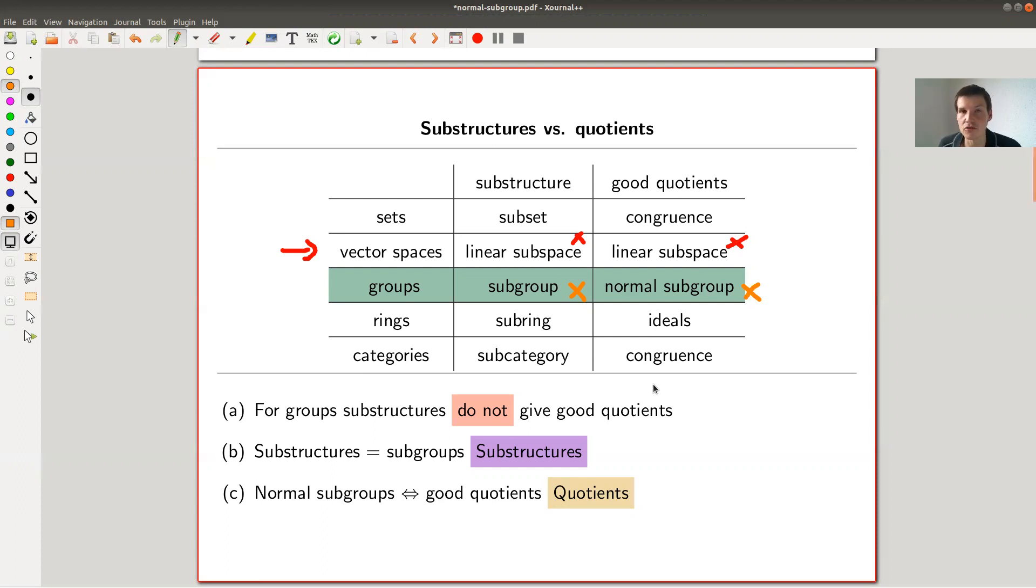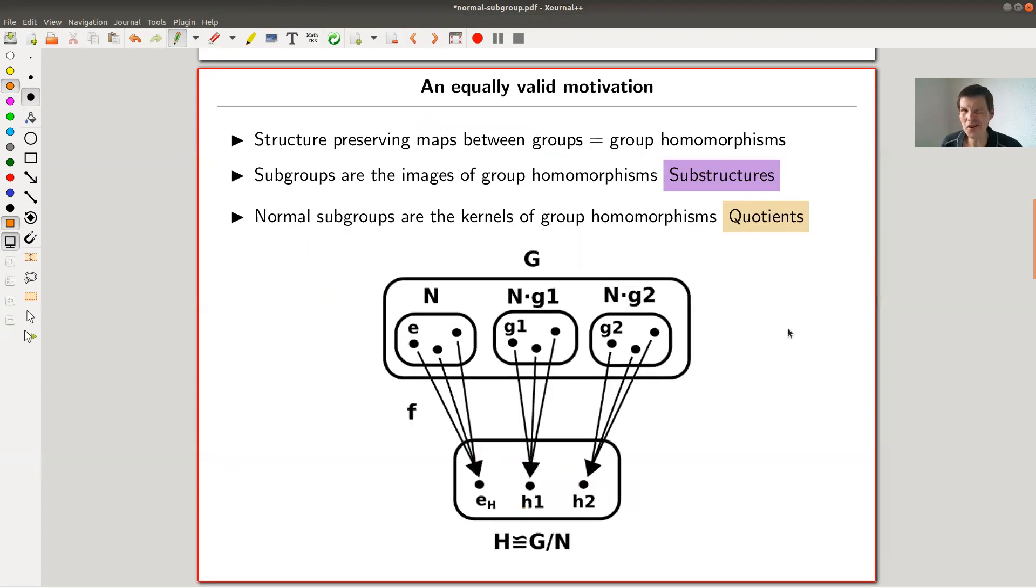The notion of a subgroup will not be a big shock, it will not be very surprising. Alternatively, and that's something to keep in mind, there's a different motivation, which is actually the way you would like to think about it, but it kind of also comes a little bit out of the blue because you need to know what are the right maps between groups. And the right maps between groups are, of course, group homomorphisms.